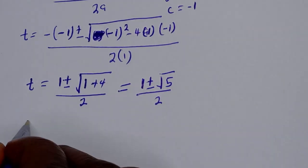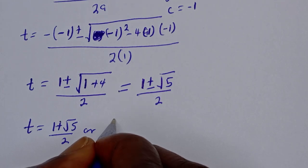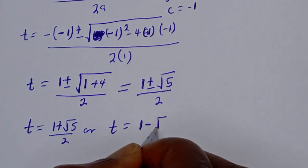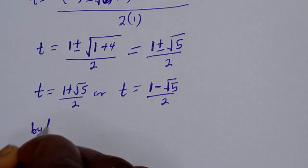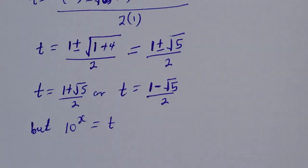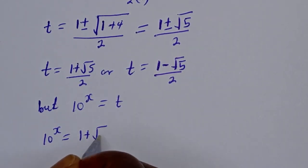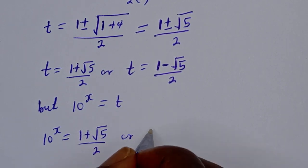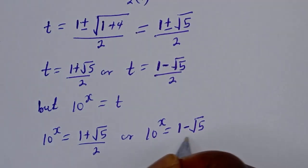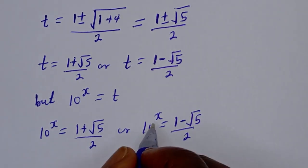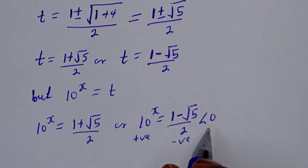Therefore, t equals (1 plus root 5) over 2, or t equals (1 minus root 5) over 2. But 10 raised to power s equals t. So 10 raised to power s equals (1 plus root 5) over 2, or 10 raised to power s equals (1 minus root 5) over 2. Since 10 raised to power s must be positive and (1 minus root 5) over 2 is less than 0, the whole of this second value is rejected.